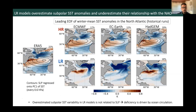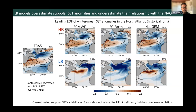Coming to some results now. I'm showing the leading EOF of winter mean SST anomalies in the North Atlantic and the associated sea level pressure anomalies from the historical runs. The HR models in the top row do a much better job of capturing the tripole SST pattern and associated NAO-like sea level pressure that we see in ERA-5 reanalysis. Surprisingly, the LR models fail to capture this very fundamental pattern. In particular, they overestimate SST anomalies in the subpolar region and severely underestimate their correlation with the NAO. In fact, in the LR simulations there really aren't any coherent sea level pressure anomalies associated with this SST variability.